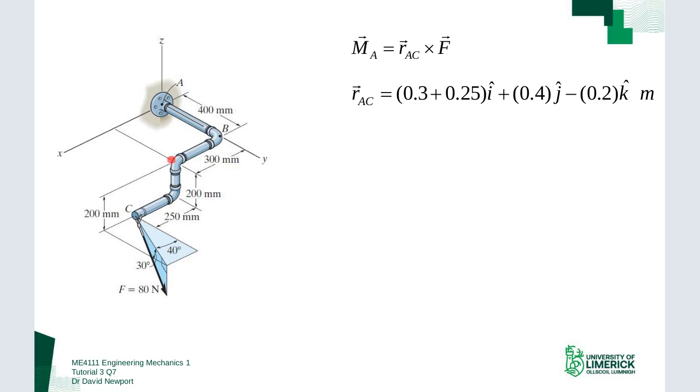I need to come out 300 millimeters and then another 250 millimeters in the X direction, and I need to come down 200 millimeters in the Z direction. Expressing that in vector format, we've got RAC is 0.3 plus 0.25 i-hat—that's in the X direction, this bit here and this bit here.